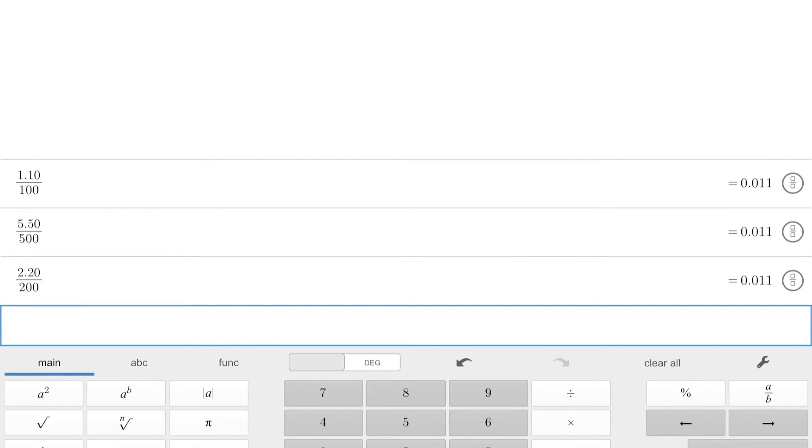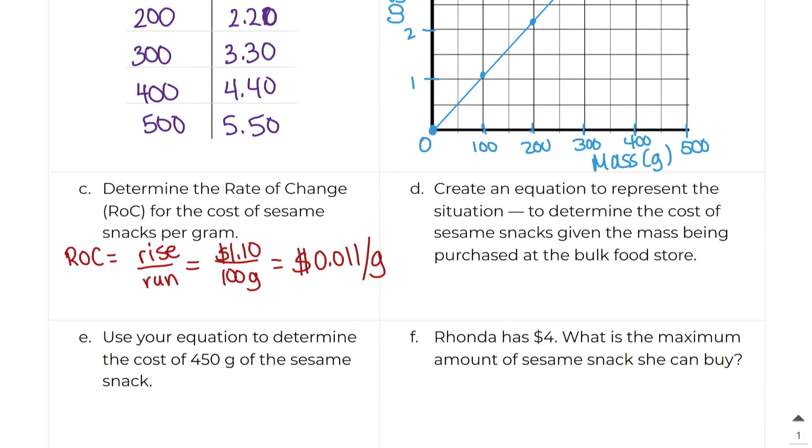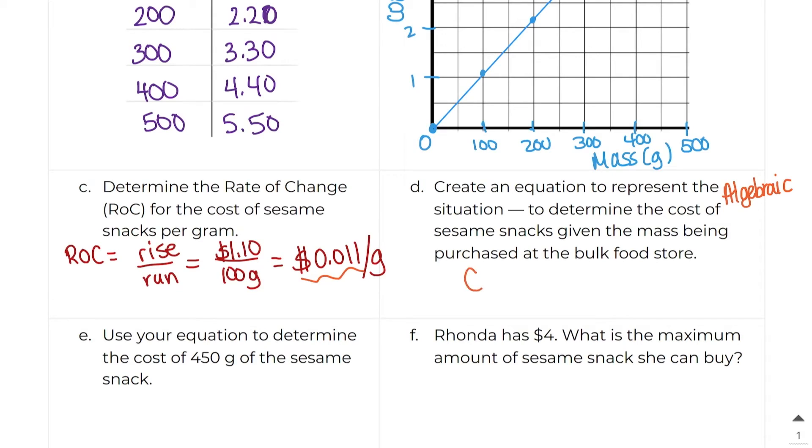And I still get that 0.011. So it doesn't matter how you want to do it. You'll still get the same answers. All right, our last representation says to create an equation to represent the situation. And so this is our algebraic representation. So we know that the cost per gram is 0.011. So we know that how much we're paying, the cost, is equal to 0.011 for every gram. So that's why we would say C equals 0.011G.